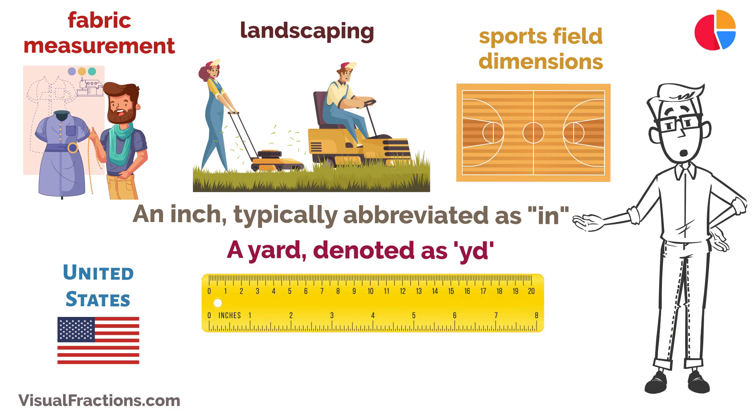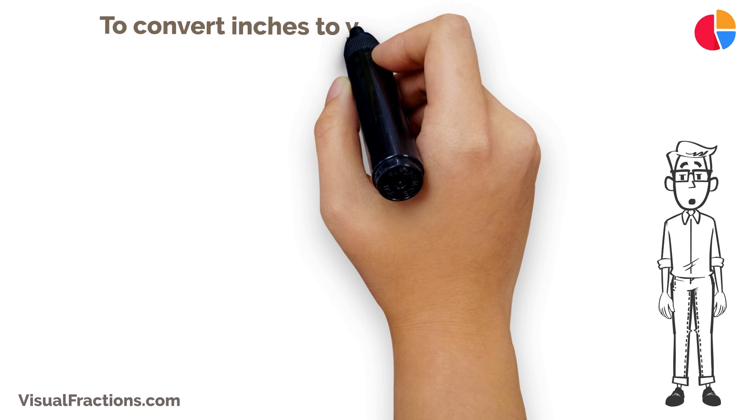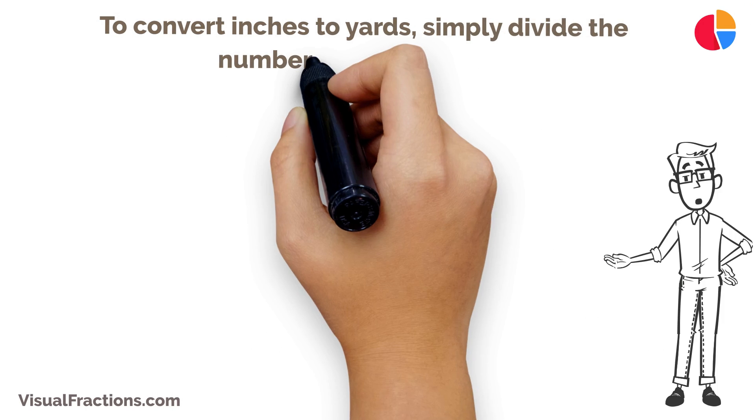The crucial factor to remember for this conversion is one inch equals exactly 1/36th of a yard. To convert inches to yards, simply divide the number of inches by 36.